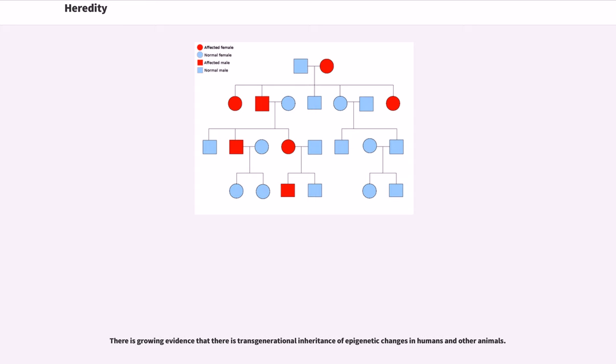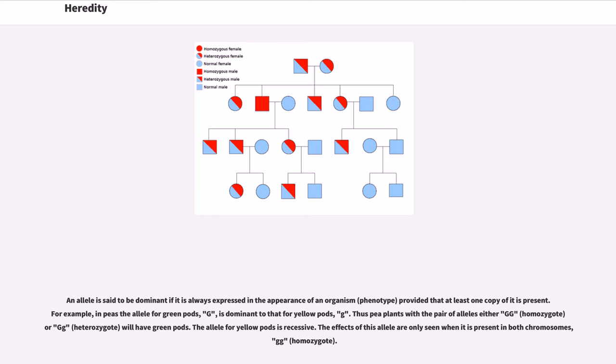There is growing evidence that there is transgenerational inheritance of epigenetic changes in humans and other animals. An allele is said to be dominant if it is always expressed in the appearance of an organism, phenotype, provided that at least one copy of it is present.